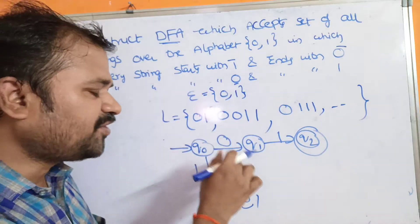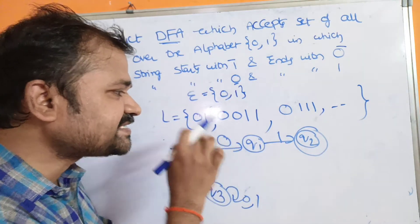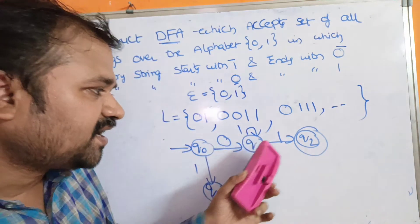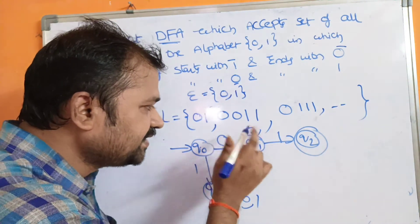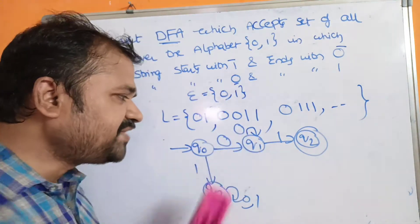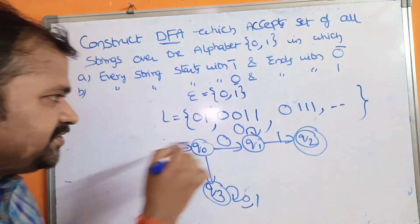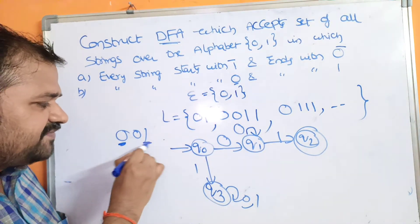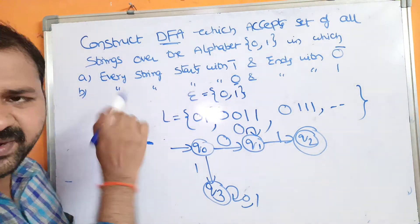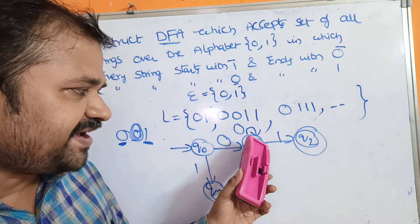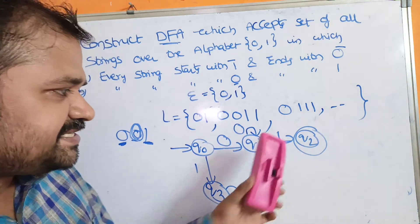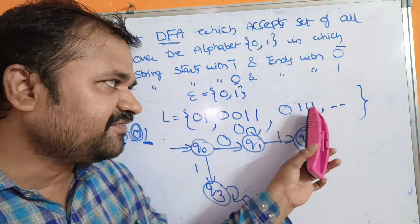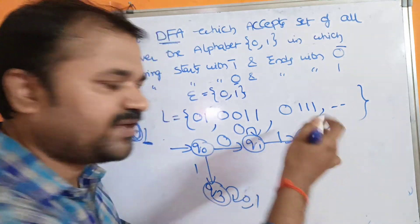On Q1, we apply 0 and 1. Since every string ends with 1 (already applied going to Q2), we have to apply 0 on Q1. After a 0 we can still have '0,1' — there is no constraint. Every string starts with 0 and ends with 1, so in between we can have any number of 0s, which is why there is a self-loop on Q1 for input 0. On Q2, since every string ends with 1, we apply a self-loop for input 1.